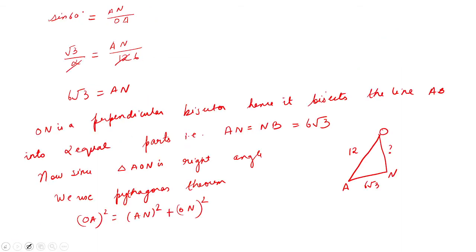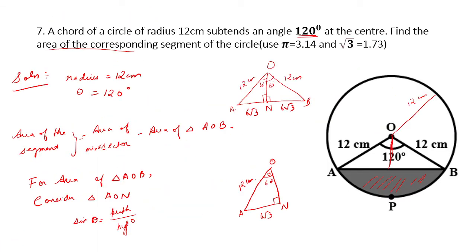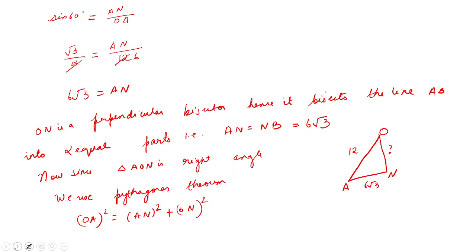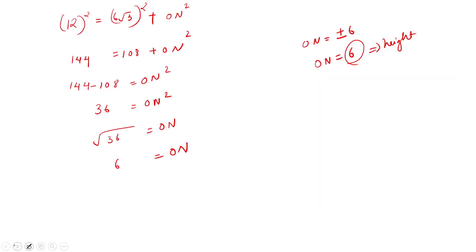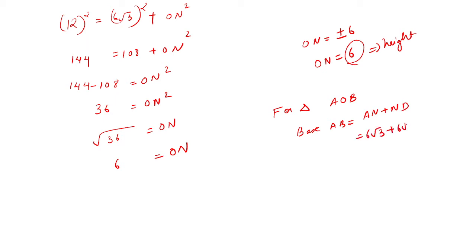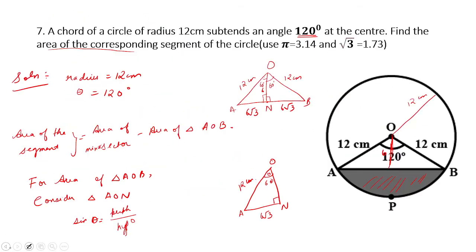Now we have everything we need. For triangle AOB: base AB = AN + NB = 6√3 + 6√3 = 12√3, and height ON = 6.